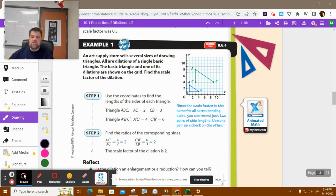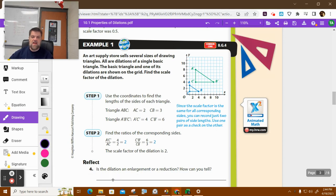So on example number one, it says that an art supply store sells several sizes of drawing triangles. All are dilations of a single basic triangle. The basic triangle and one of its dilations are shown on the grid. Find the scale factor of the dilation.